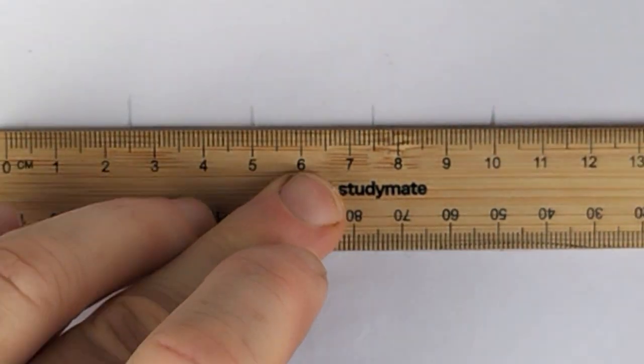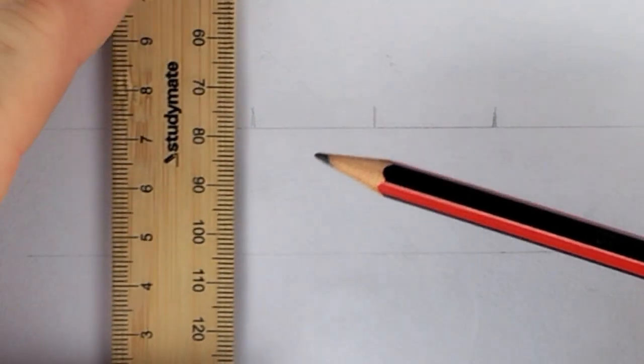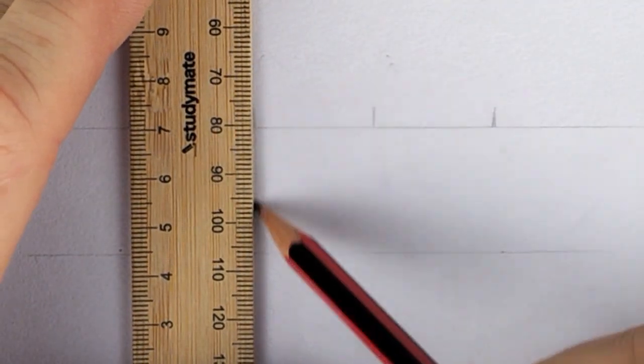Rotate your rule 90 degrees and draw vertical lines down from the spacing lines at the top of the grid. This will make squares.